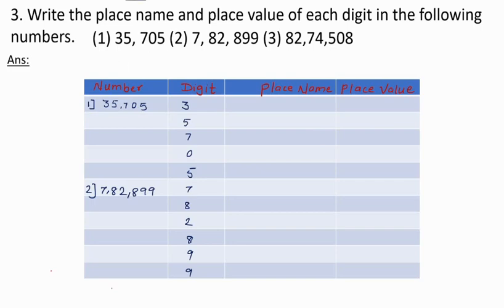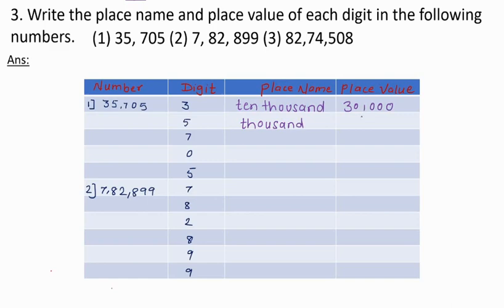Next question: Write the place name and place value of each digit in the following numbers. First number is 35,705. The number is 35,705. First digit is 3: its place name is 10,000 and place value is 30,000. Next digit is 5: its place is 1000 and the place value is 5000.